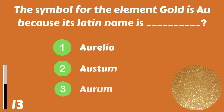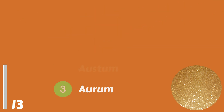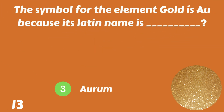The symbol for the element gold is AU because its Latin name is Aurelia, Ostum or Aurum. The answer is Aurum.